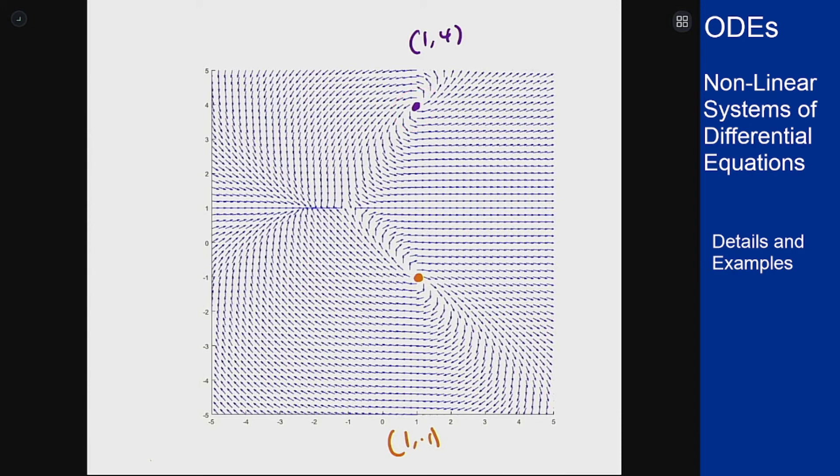We had our minus 1 comma 1 point, that's like a saddle, which also this looks like a saddle with the way it's set up in here. And then we had minus 2 comma 1, which acted like a nodal sink, which is exactly what I see from the picture here.